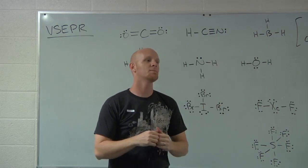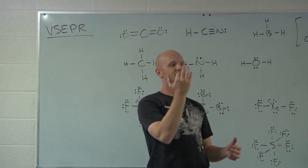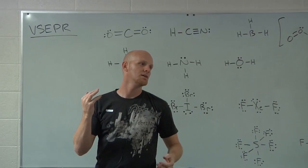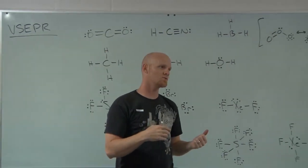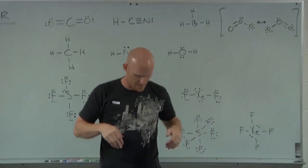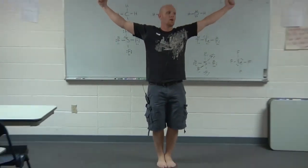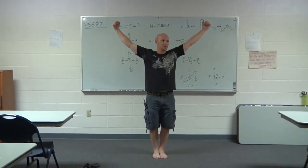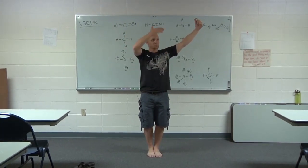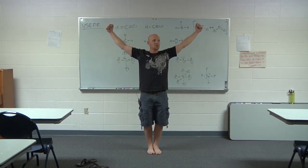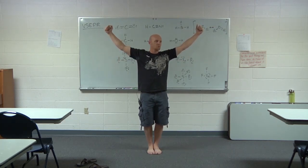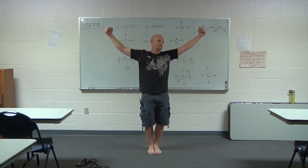With three electron domains, 360 divided by 3 gives 120 degrees apart. Picture arms and legs all 120 degrees apart — it's still a two-dimensional, flat structure. We call that trigonal planar: to the three corners of an equilateral triangle, everything 120 degrees apart.